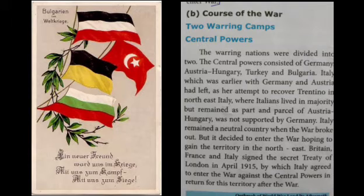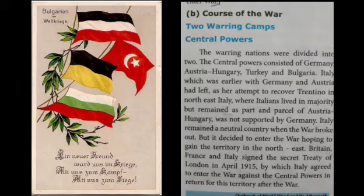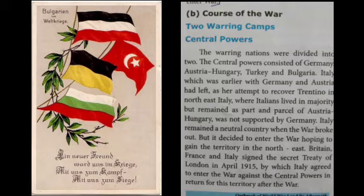Italy decided to enter the war, hoping to gain territory in the northeast. In April 1915, the secret Treaty of London was signed by Britain, France, and Italy. By this secret Treaty of London, Italy agreed to enter the First World War against the Central Powers in return for territory after the war.